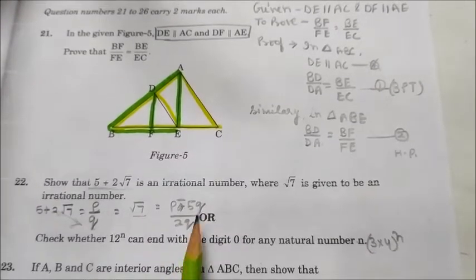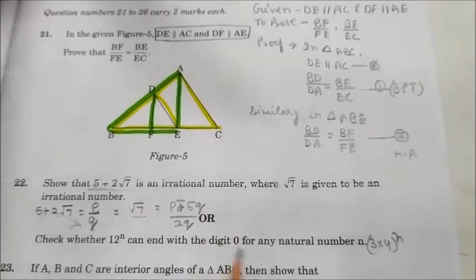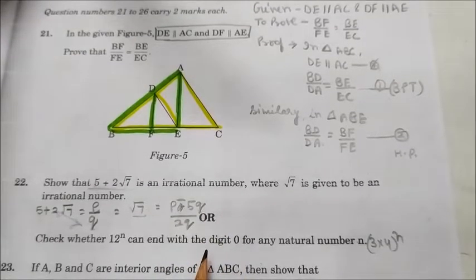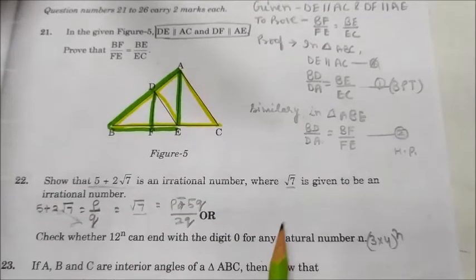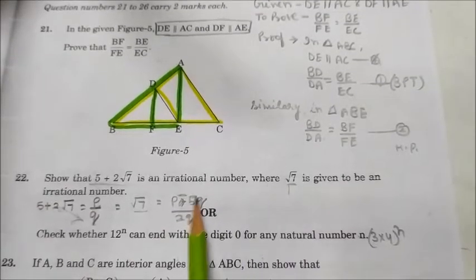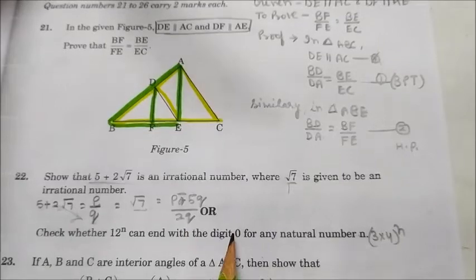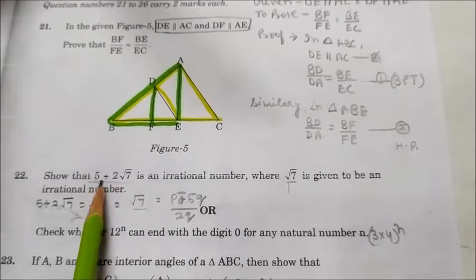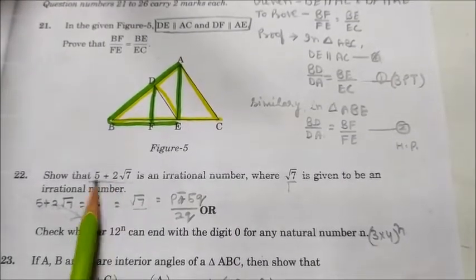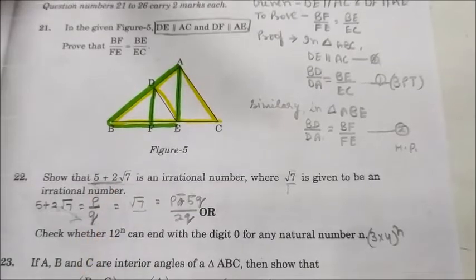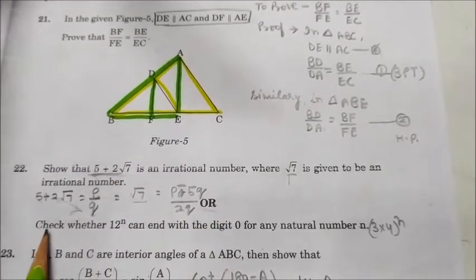Therefore √7 would also be rational, but this contradicts the given fact that √7 is irrational. Therefore our assumption is wrong, and hence 5 + 2√7 is an irrational number. Hence proved.